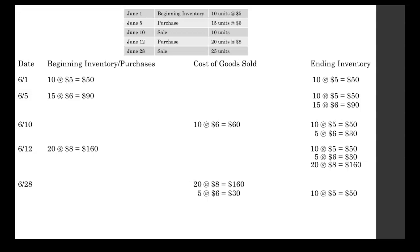The 5 units we had at $6 apiece — we sold all 5 of those, so we don't write any of those in ending inventory. The 20 units at $8 that we had from June 12th — we sold all of those on the 28th as well, so we don't have any of those left either. The only units remaining on June 28th are those 10 units at $5 apiece.